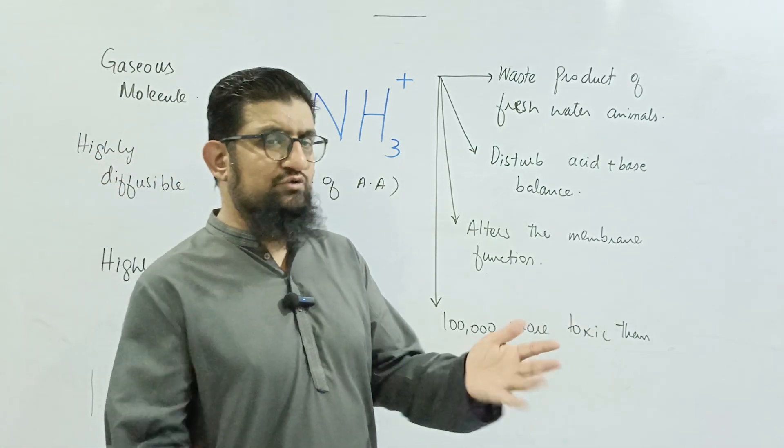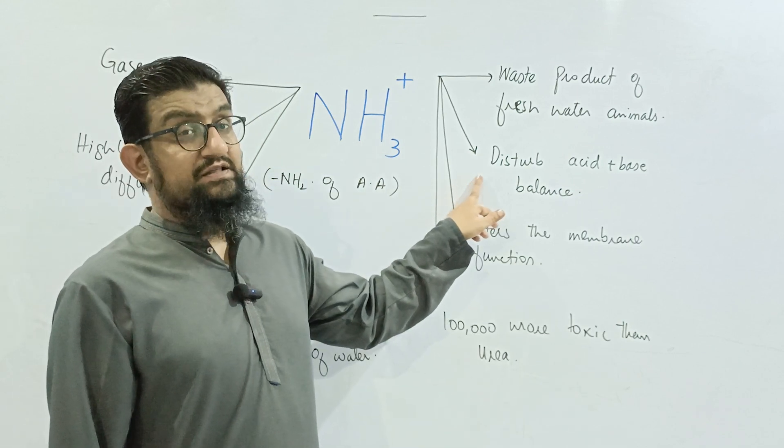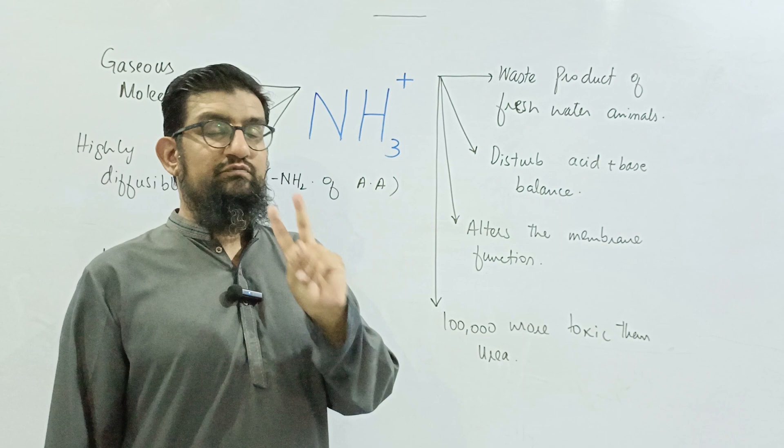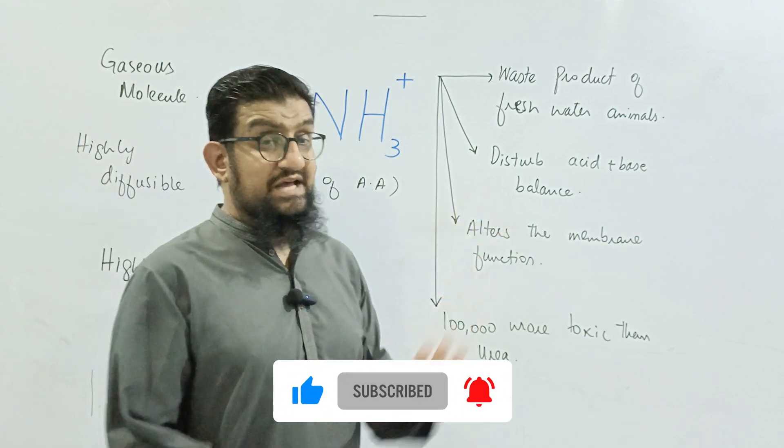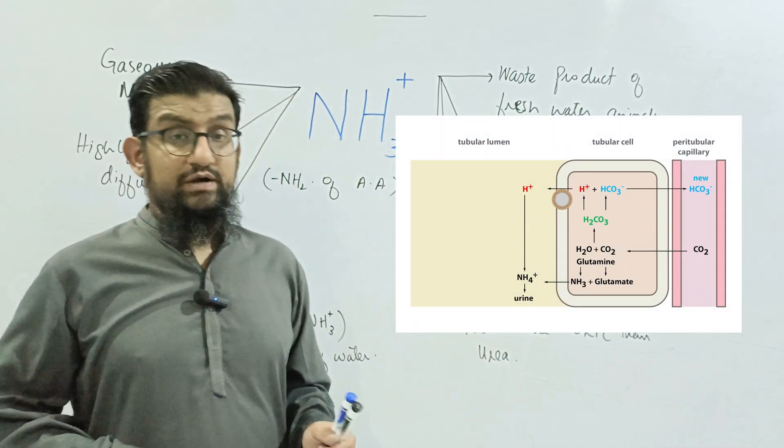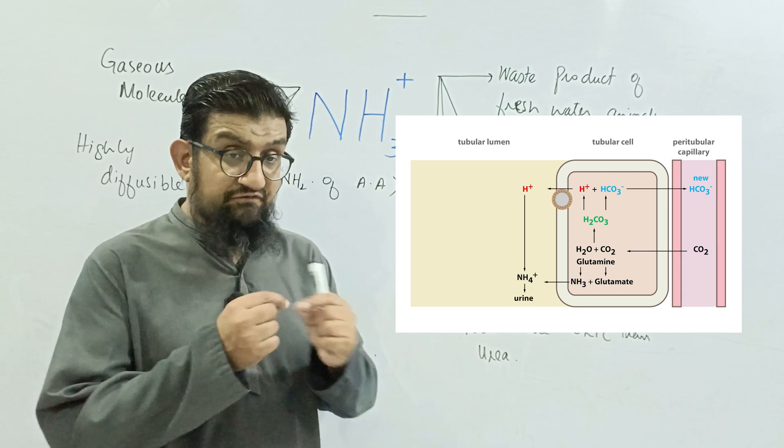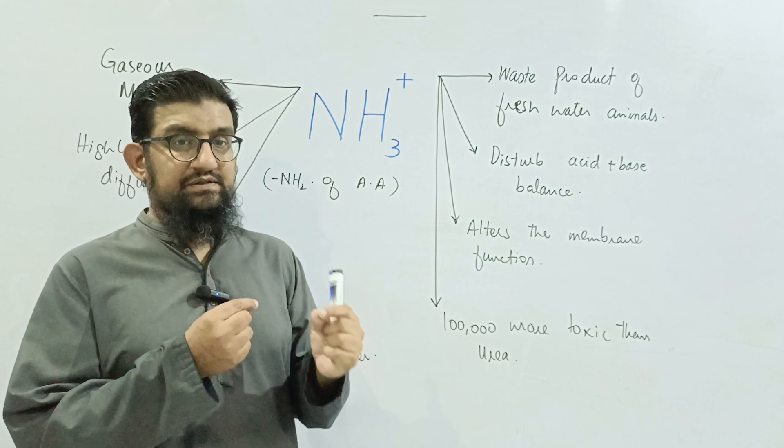All right. Now when ammonia enters in the body, it has two very devastating effects on the body of an animal. Number one, it disturbs the acid base balance of the body, which is very, very lethal. As you know, our body operates between very fine lines of acid base balance, and any disturbance in that balance will eventually disrupt the whole system of our body.